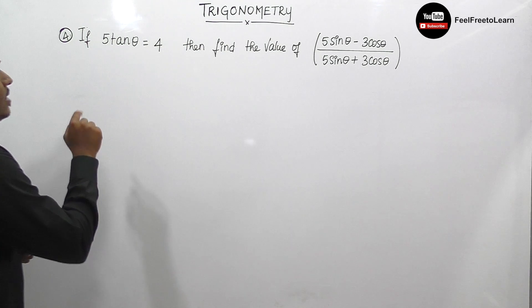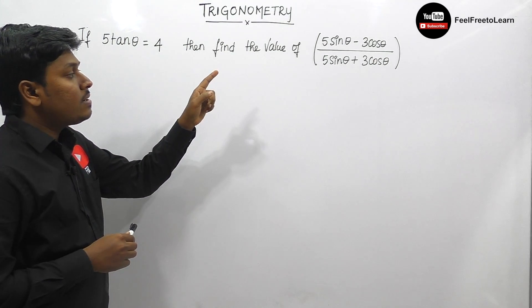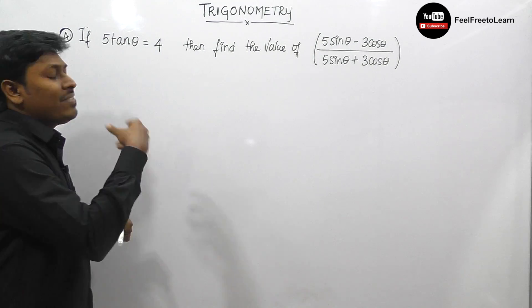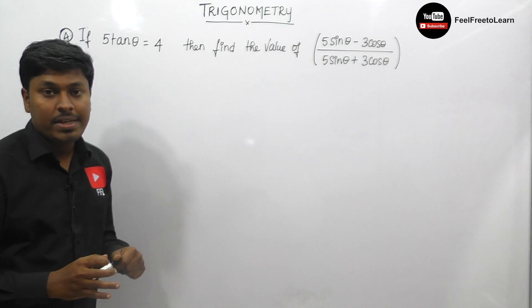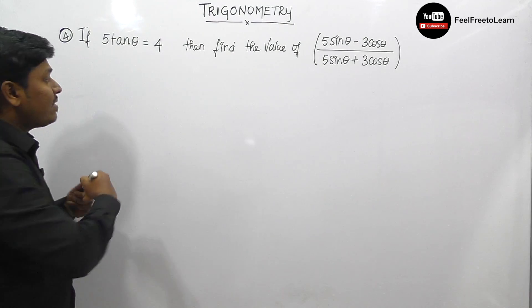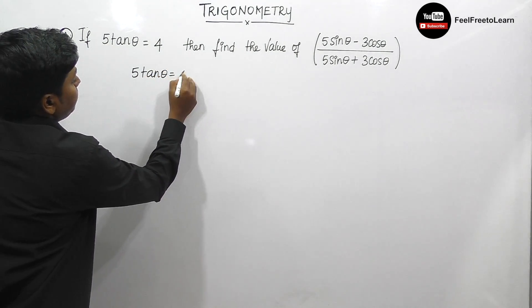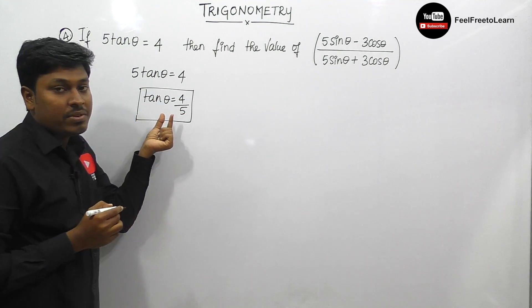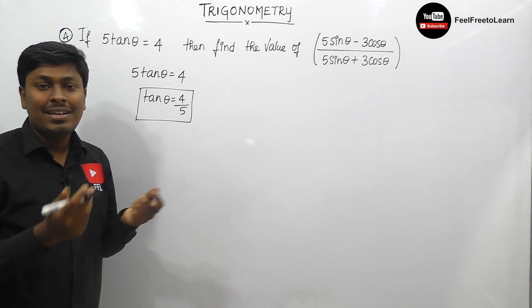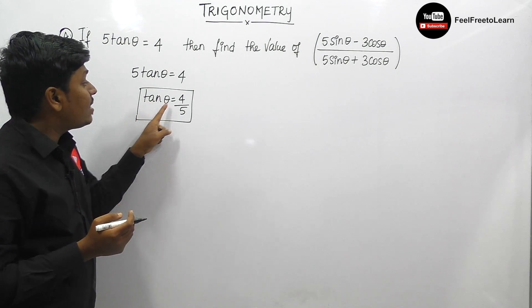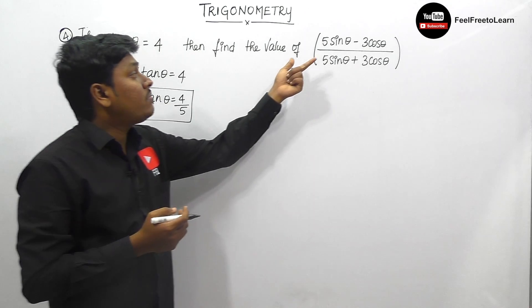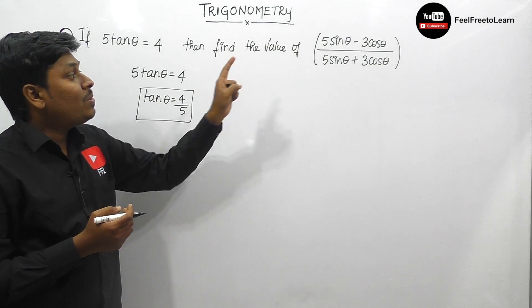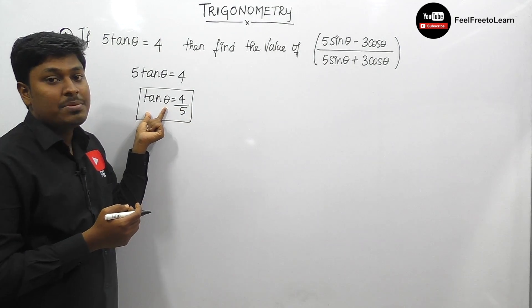Question number 4: if 5·tan θ equals 4, find the value of (5·sin θ − 3·cos θ)/(5·sin θ + 3·cos θ). From the given condition, tan θ equals 4/5. We cannot directly find θ since 4/5 is not a standard value. Similar to the previous question, we need to convert the expression entirely in terms of tan θ so we can substitute tan θ equals 4/5.